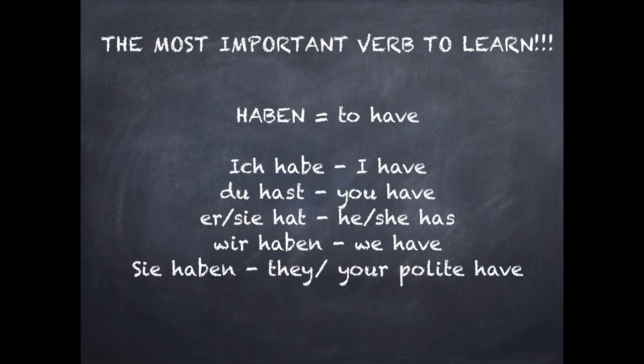The most important verb to learn is haben, meaning 'to have', and you're going to need this for the past tense. So: ich habe — I have; du hast — you have; er/sie hat — he or she has; wir haben — we have; sie haben — they have, or the polite you, have.